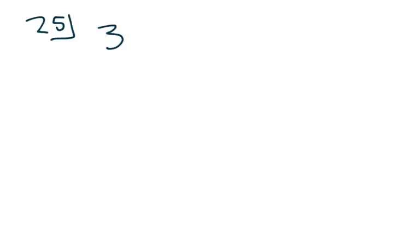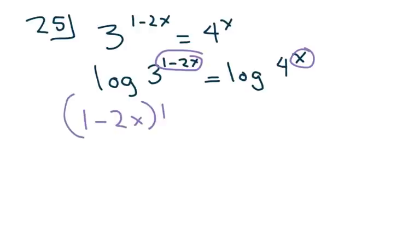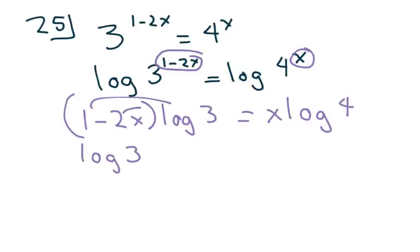Number 25 — it looks a little harder here. We have 3 to the 1 minus 2X power equals 4 to the X power. Take the log of both sides. In this case we're going to use the power property on both. So we bring down the powers: we have 1 minus 2X times log of 3, or log base 10 of 3, equals X times log of 4. Now let's go ahead and distribute here. So we get log of 3 minus 2X log of 3 equals X log of 4.